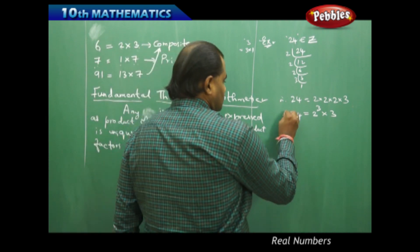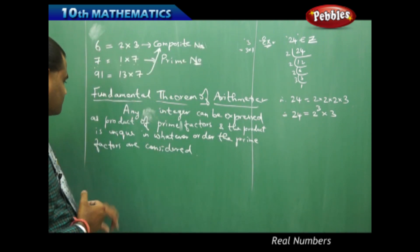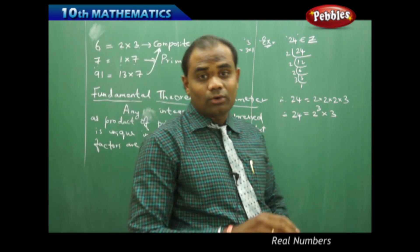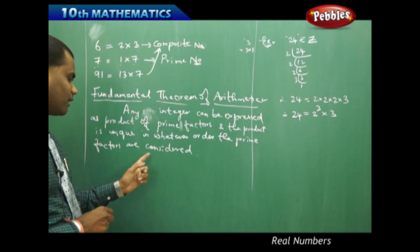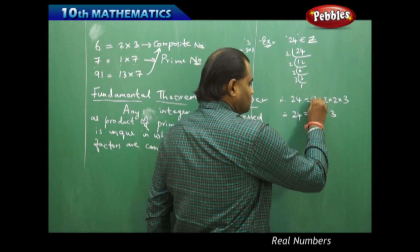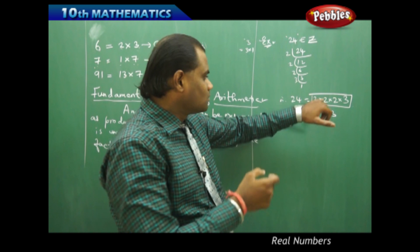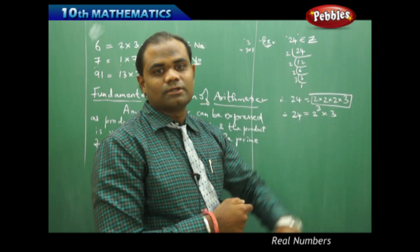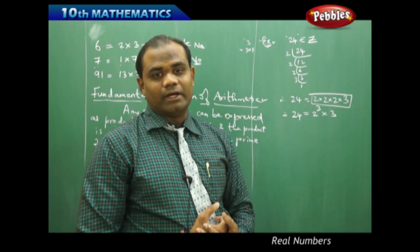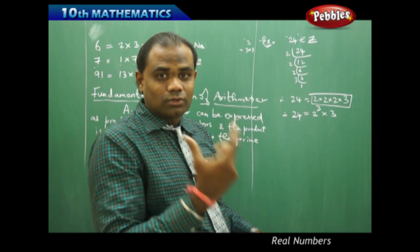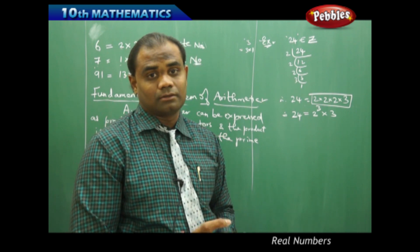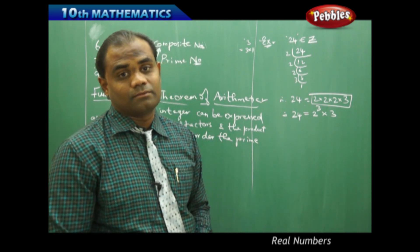The statement also extends to say the product is unique — meaning one and only one. This product cannot be changed regardless of the order in which the prime factors are considered. Whatever factors we got here must be fixed and unique. This is the one and only possibility for expressing 24 as a product of prime factors. You cannot find any other combination of factors whose product also gives 24. This is a very important result in prime and composite number theory.